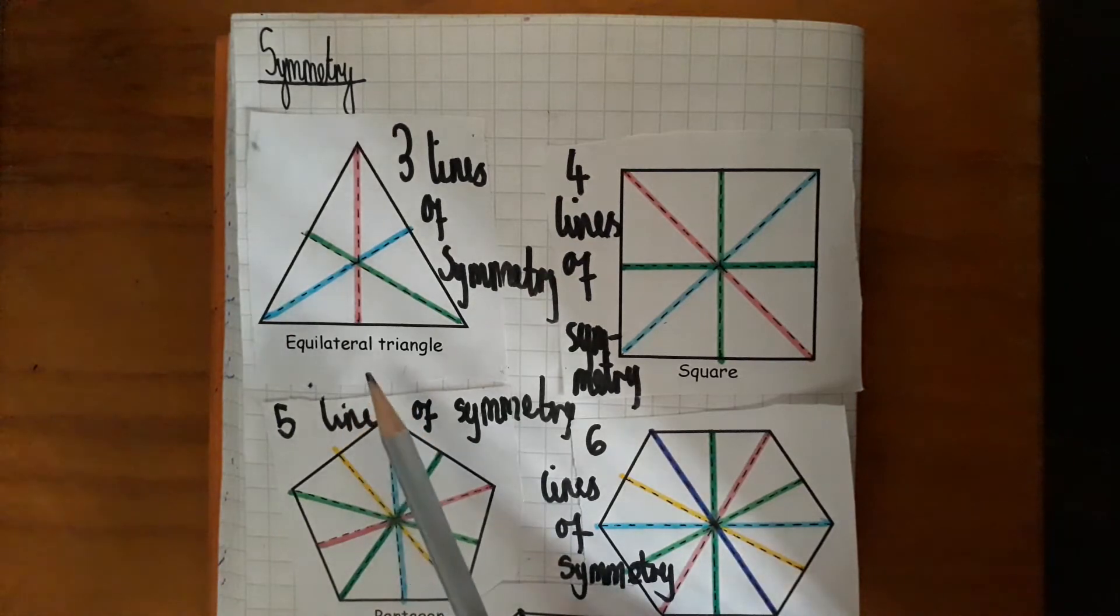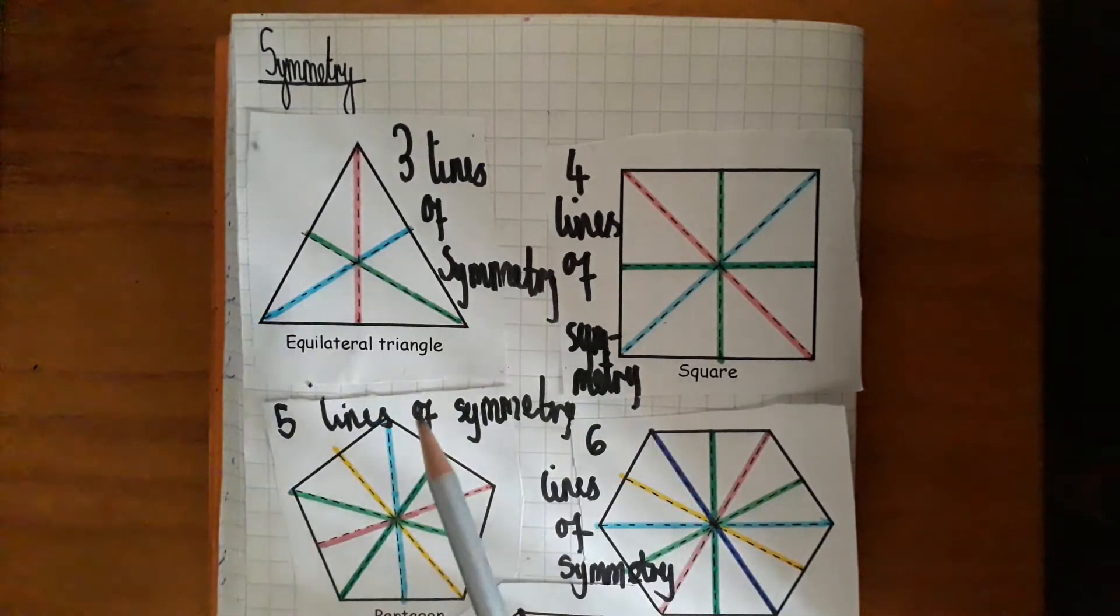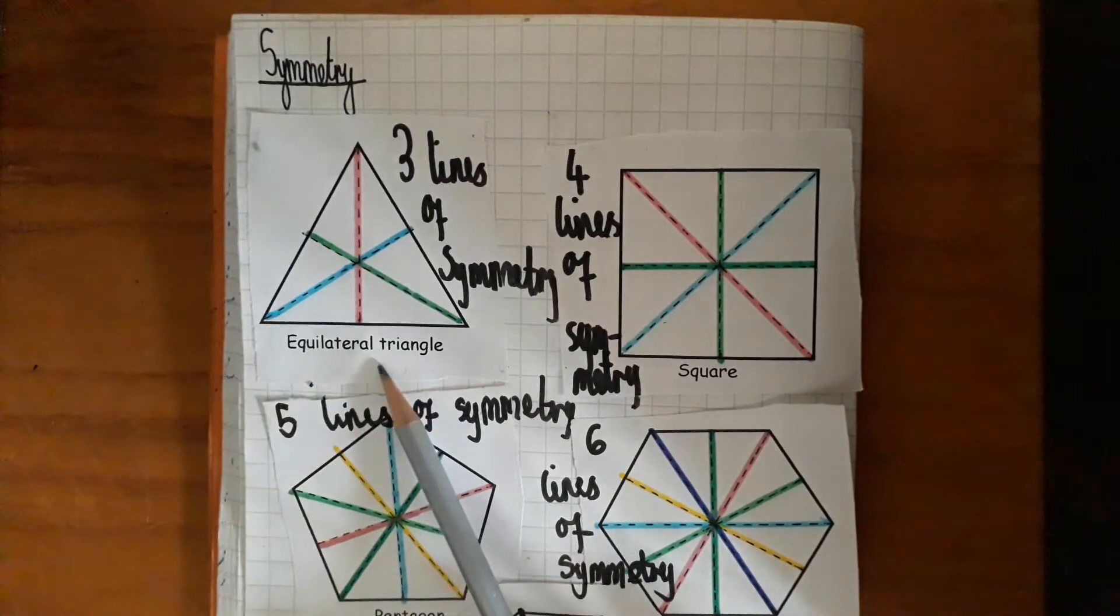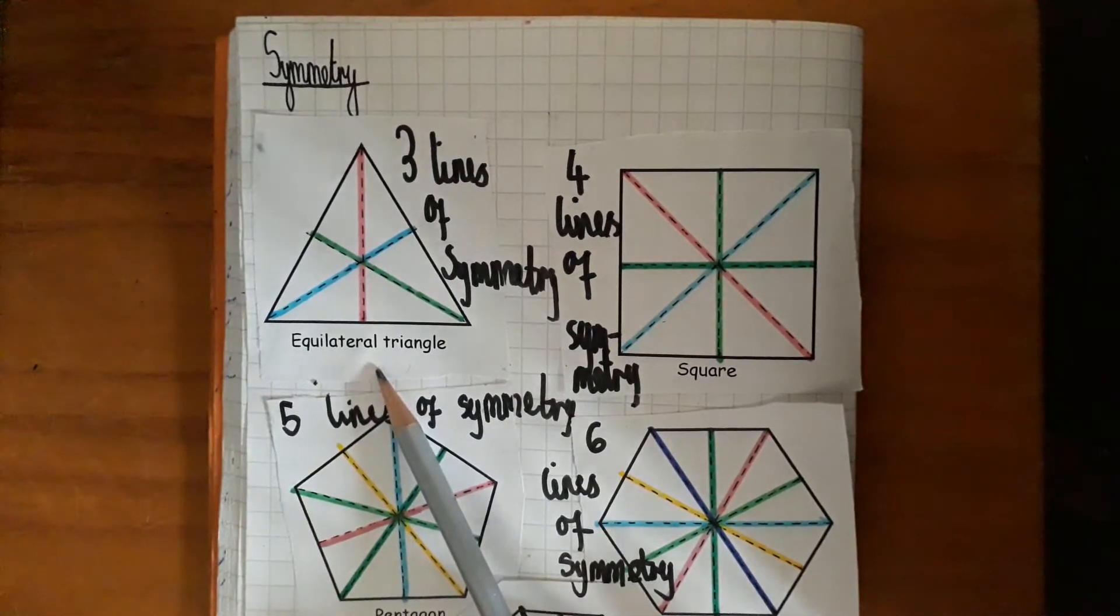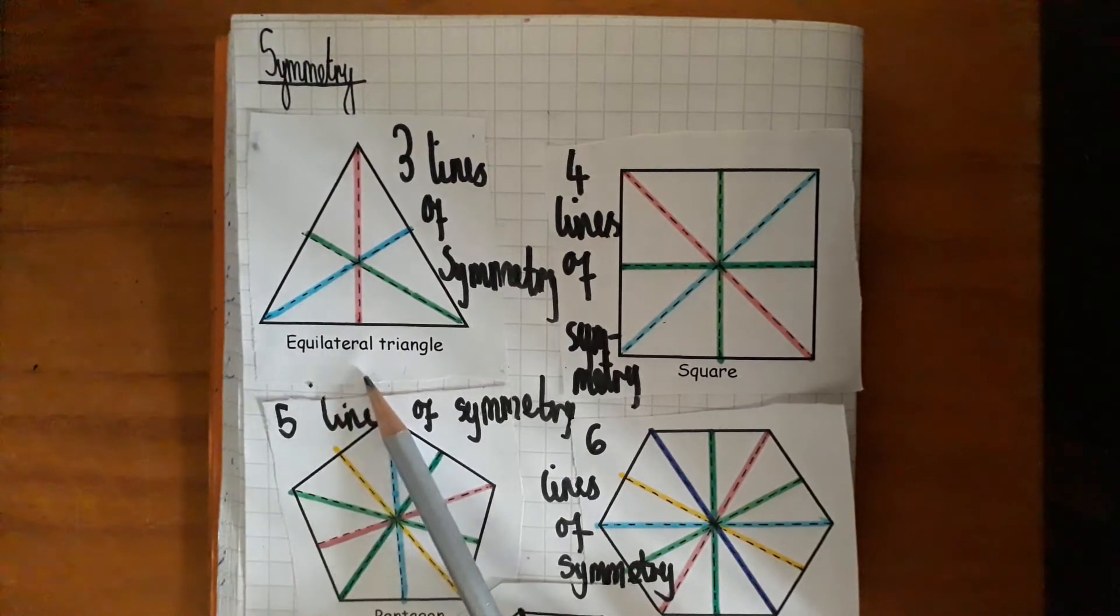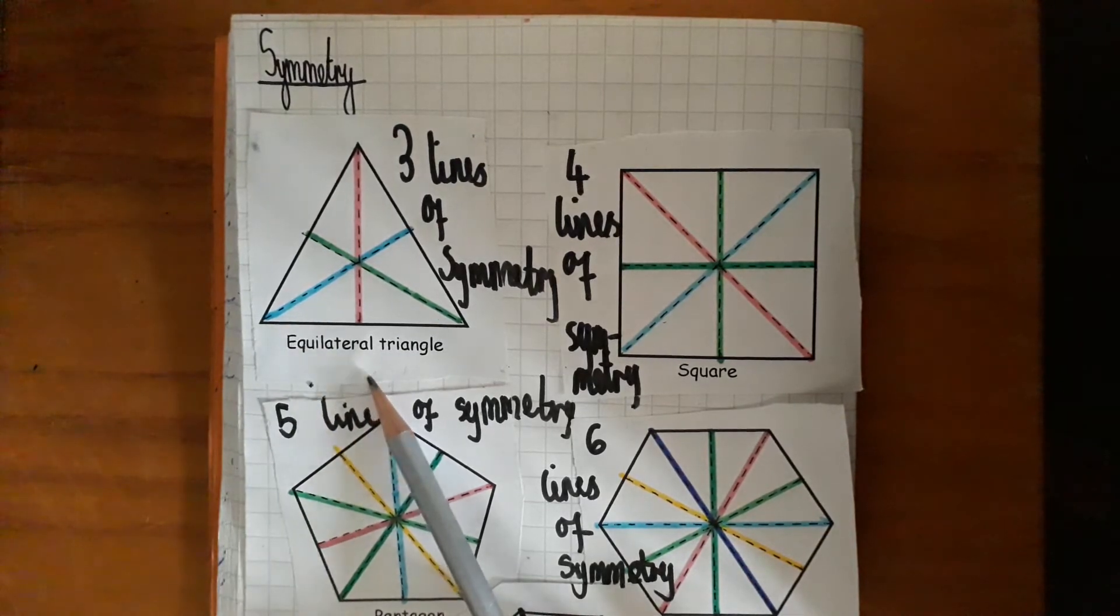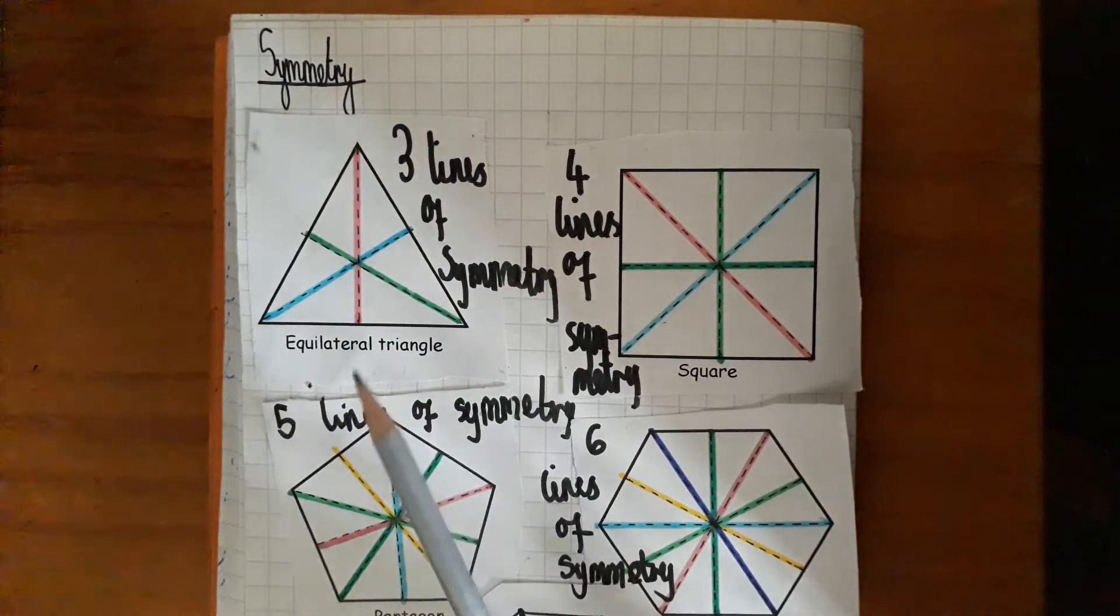What I suggest you do is either, if you can print a set of regular shapes, okay, so you can find lots on Google images and so forth, regular shapes, and then you need to draw the lines of symmetry.